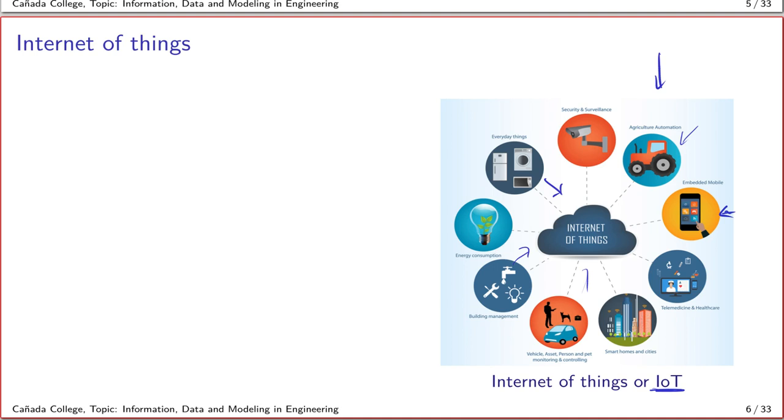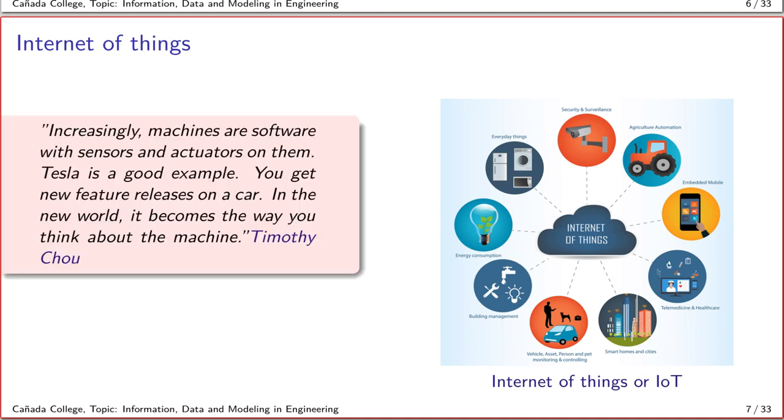Increasingly, machines are getting closer and closer to being software that are being run by sensors and actuators attached to them. For example, you can think of the Tesla car these days. You can actually upgrade a car by just getting a software upgrade, which was something that was unimaginable before.